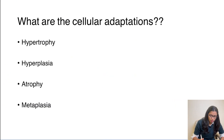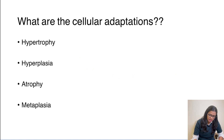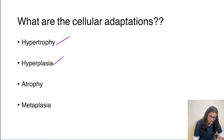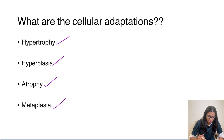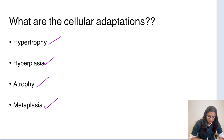What are the types of cellular adaptations? The cell can either undergo hypertrophy, hyperplasia, atrophy, or metaplasia. We will see each one of them.